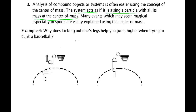Let me show you an example of how the center of mass can be used to analyze a complicated object. Take a basketball player whose legs are bent behind him as he tries to dunk. His ability to reach a certain height depends on his velocity at takeoff and the angle. He needs the correct launch angle and a certain initial velocity, which depends on his leg muscles and running speed when he jumps.